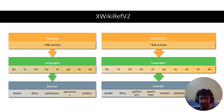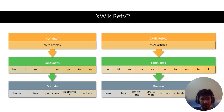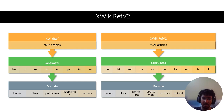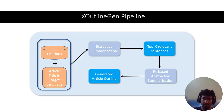Just an overview of the dataset: X-WikiRef was introduced in X-WikiGen and has around 70,000 articles across 8 languages, 7 of which are low-resource Indian languages, covering 5 domains. X-WikiRef2 is an extension with 92,000 articles, adding Telugu and Kannada as additional languages and animals, cities, and companies as 3 new domains.